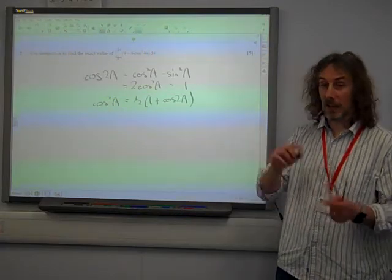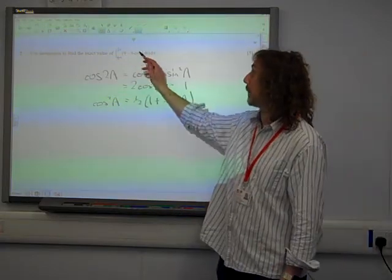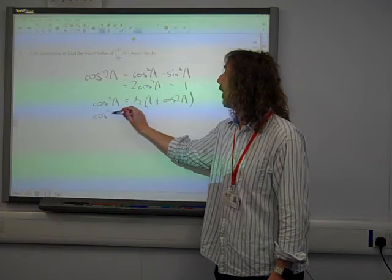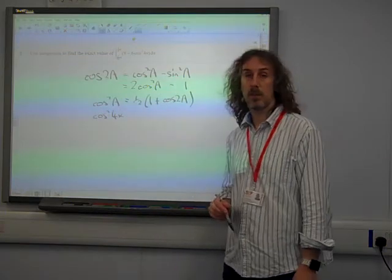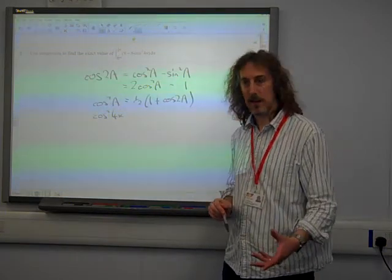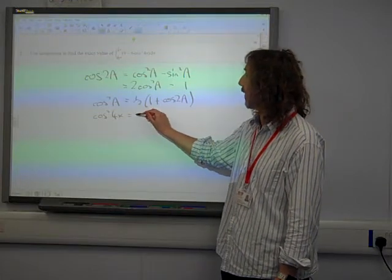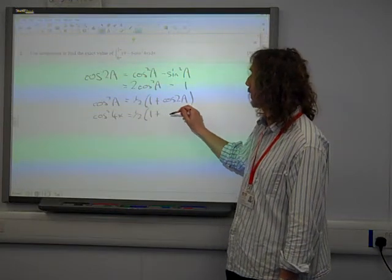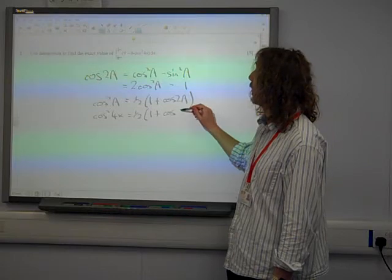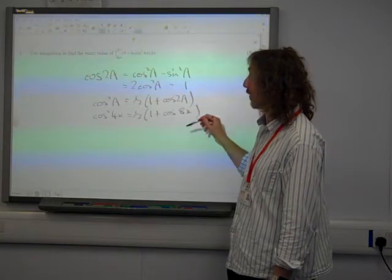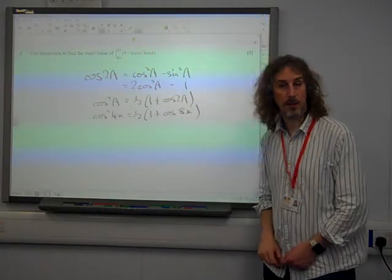Well, we're supposed to be dealing with cos squared 4x. So we're replacing a with 4x. That becomes a half of 1 plus cos 8x, because twice 4x gives us 8x.